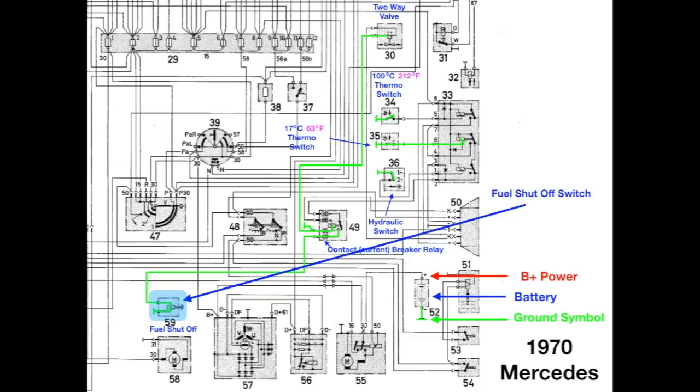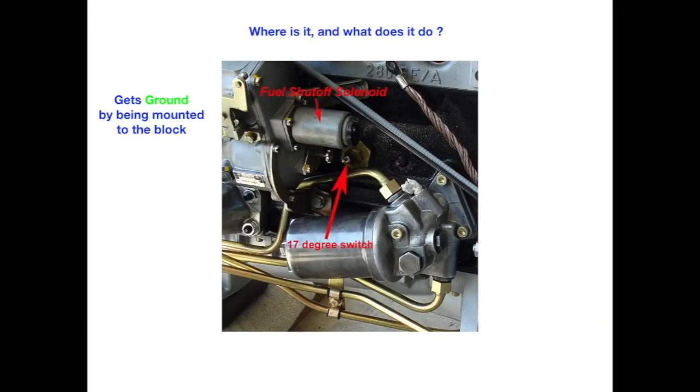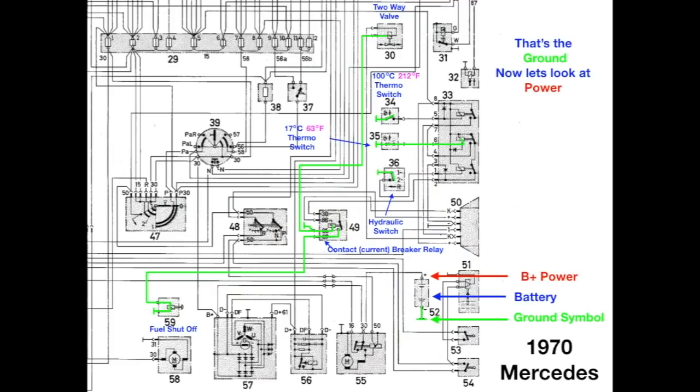We also have a fuel shut-off switch. If you look at this, there's ground going through it because it has continuity, but it gets its ground by being mounted to the block. And the switch simply opens or closes that ground path back to the breaker relay. So, that's the ground. Now, let's look at the power side.